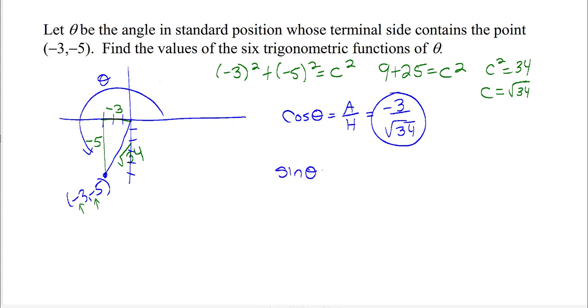Now let's do sin θ. Sine is opposite over hypotenuse, so opposite is -5 and hypotenuse is √34. That gives us -5/√34.